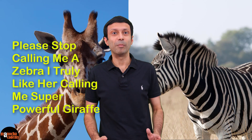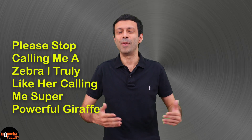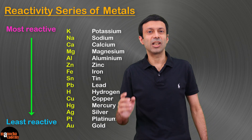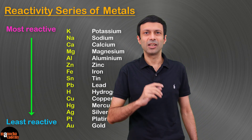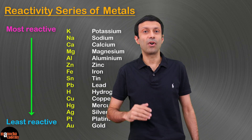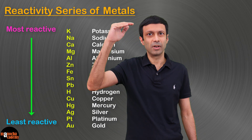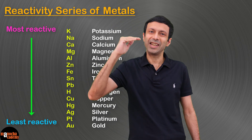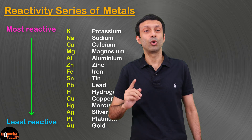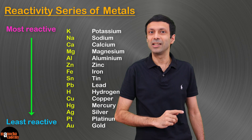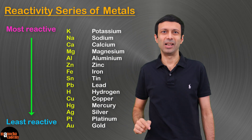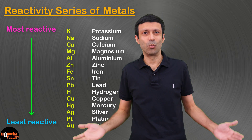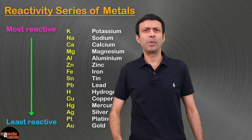Metals are arranged in a reactivity series with metals of high reactivity at the top and metals of low reactivity at the bottom. So reactivity of metals decreases down the list. Our mnemonic was: 'Please stop calling me a zebra, I truly like her calling me super powerful giraffe.'